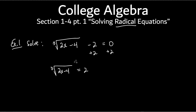Now we want to get rid of that cube root. The way to get rid of a cube root is to cube the thing. So, we cube the left side — that gets rid of the cube root and we're left with 2x minus 4. Whatever you do to the left side, you also do to the right side, so you cube the right side as well. The cube and the cube root cancel each other out.